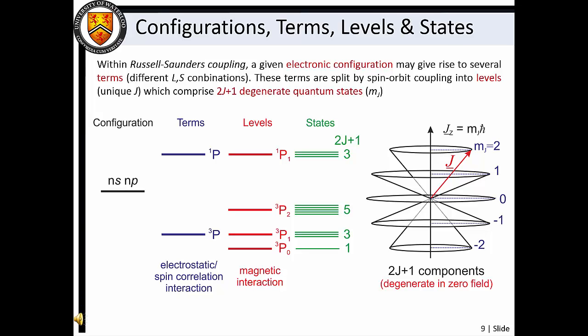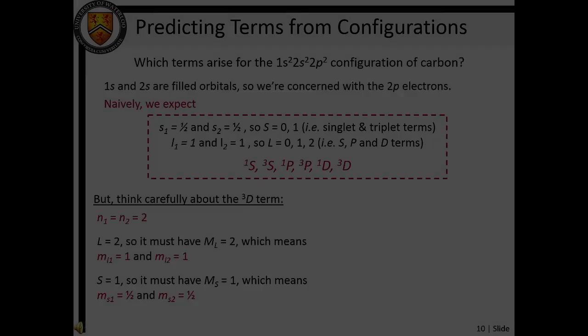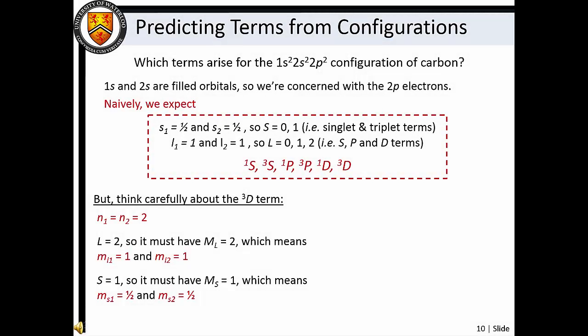To summarize what we have learned about atomic structure: an electronic configuration gives rise to terms that can occur at different energies owing to electrostatic and spin correlation interactions. These terms can then split into energy levels owing to the magnetic interaction associated with spin-orbit coupling. There are 2J+1 quantum states associated with each of these levels, which are degenerate under zero field conditions. This quantum state degeneracy can be lifted through interaction with external magnetic or electric fields.